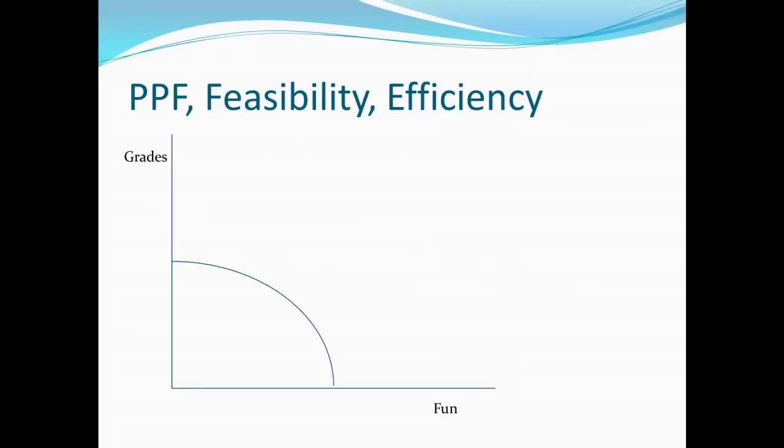So here we have a production possibility frontier for grades being on the vertical axis and fun being on the horizontal axis. We can imagine you invest your time in either grades, that is studying, or in fun, that is partying or doing whatever you find to be fun. In my case, I like to watch TV. And if you're doing one of these, it's more difficult to do the other, so there is actually a trade-off. Now what the production possibility frontier shows is that suppose I spend absolutely no time on my grades whatsoever. So I am only having fun. So I'm really far over here to the right, but also very low.